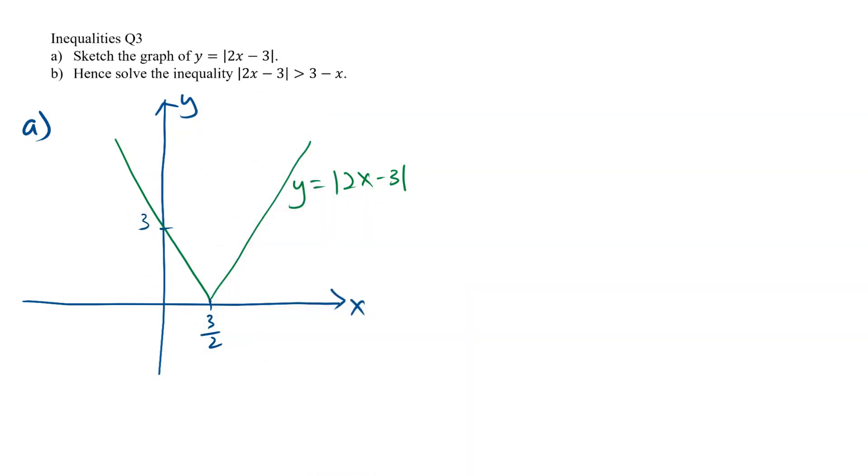In part B, we are asked to hence solve the inequality modulus 2x minus 3 greater than 3 minus x. Since this is a hence question, and we have already obtained the graph of y equals modulus of 2x minus 3 from part A, we will need to solve this inequality through a graphical approach.